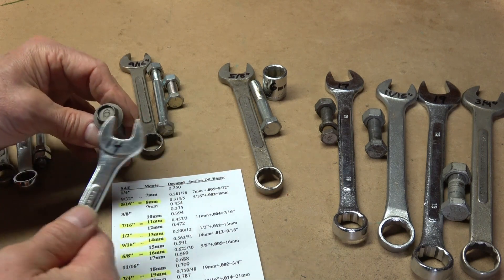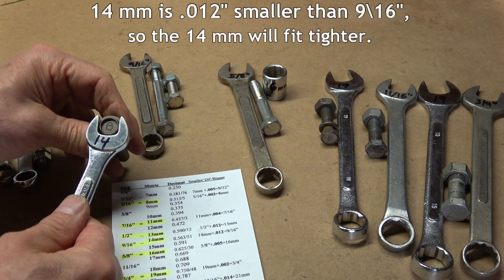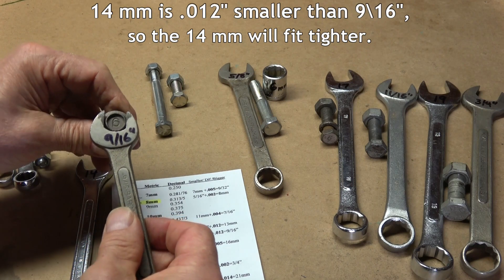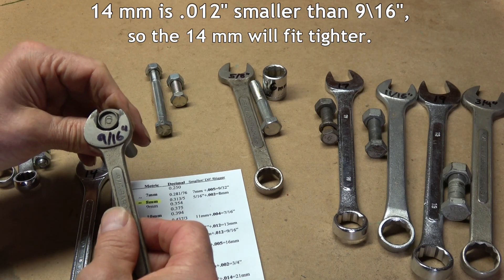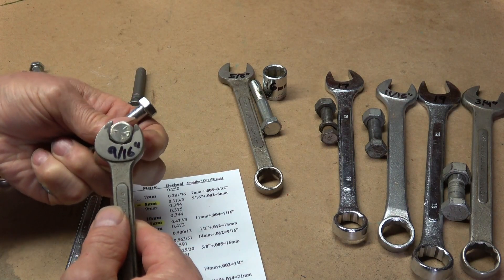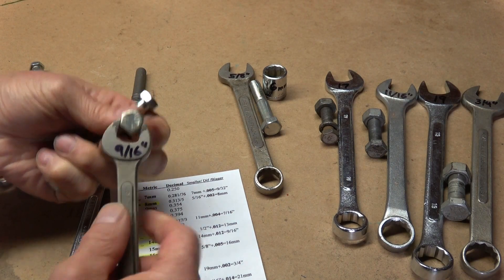You can tell by the 6 on this bolt that it's metric, and a 14 millimeter fits it well. 9 sixteenths fits it too, a little bit looser. The standard SAE construction bolt also fits tighter in the 14 millimeter.